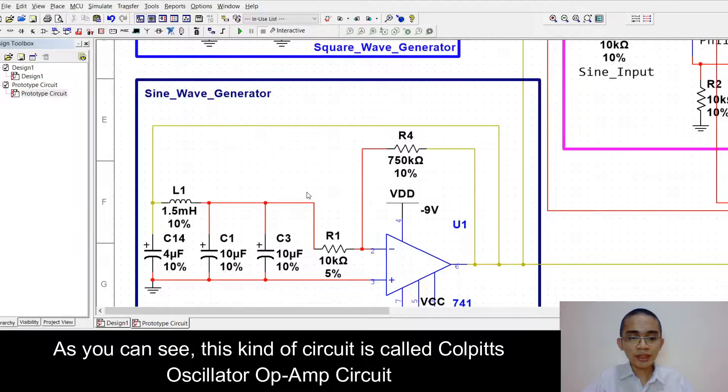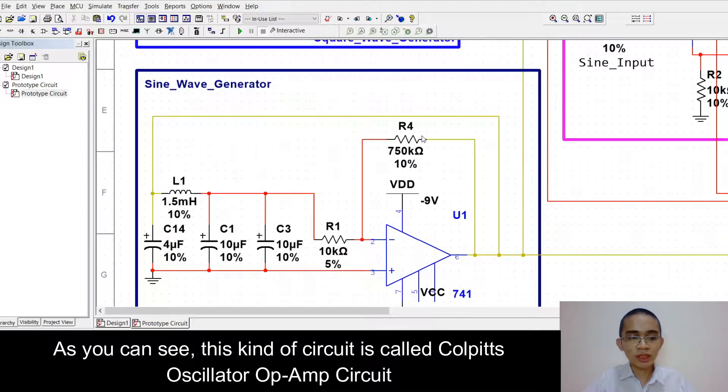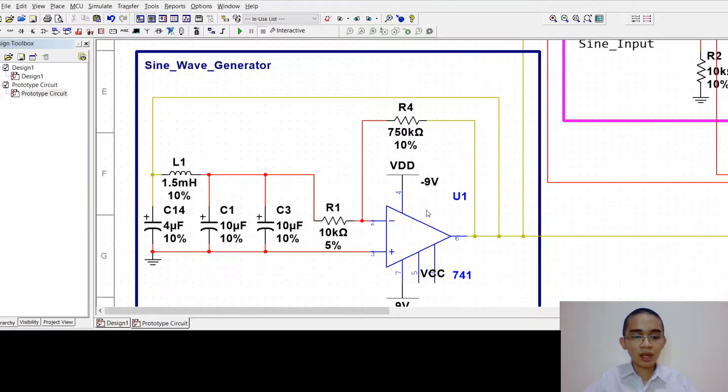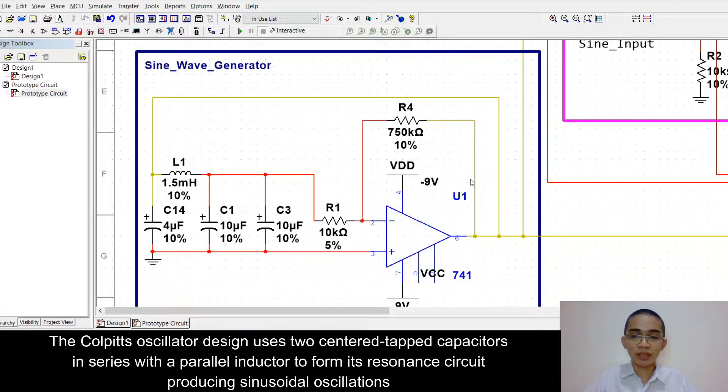As you can see, this kind of circuit is called Colpitts oscillator or OP circuit. The Colpitts oscillator design uses two center tapped capacitors in series with a parallel inductor to form its resonance circuit producing sinusoidal oscillations.